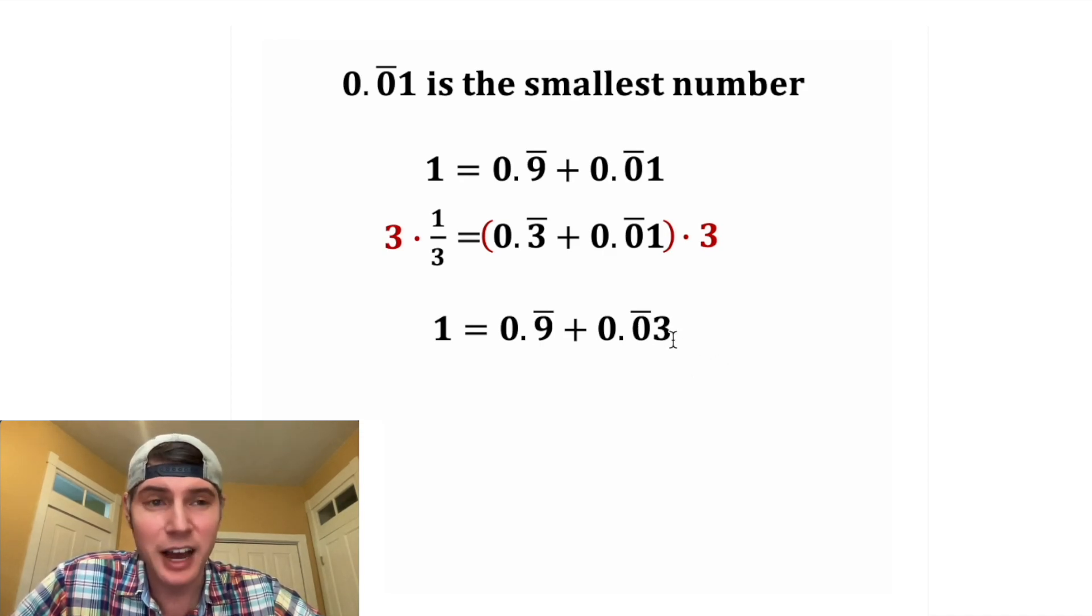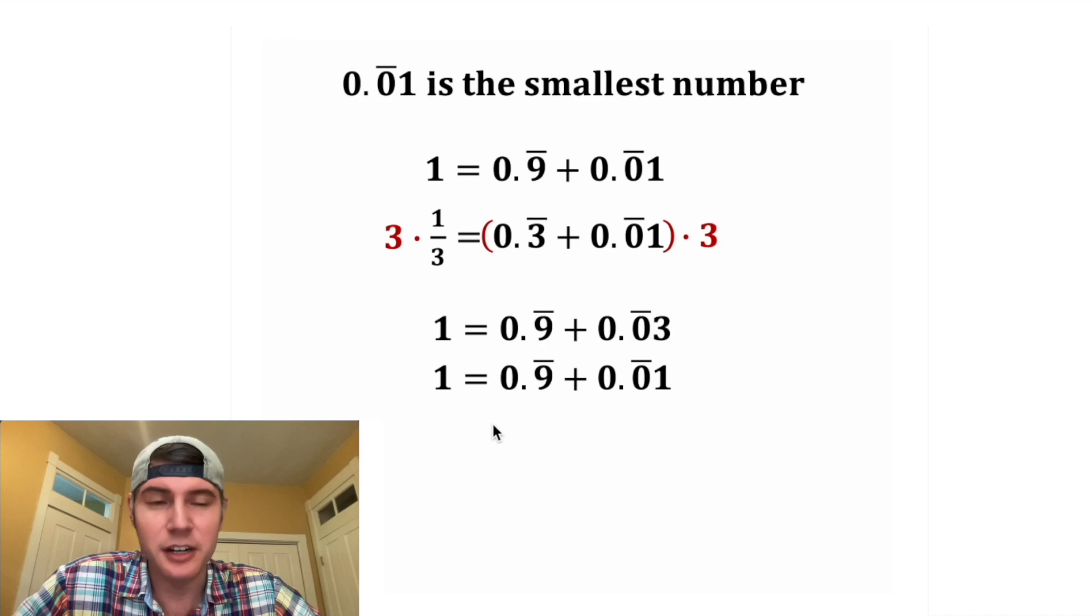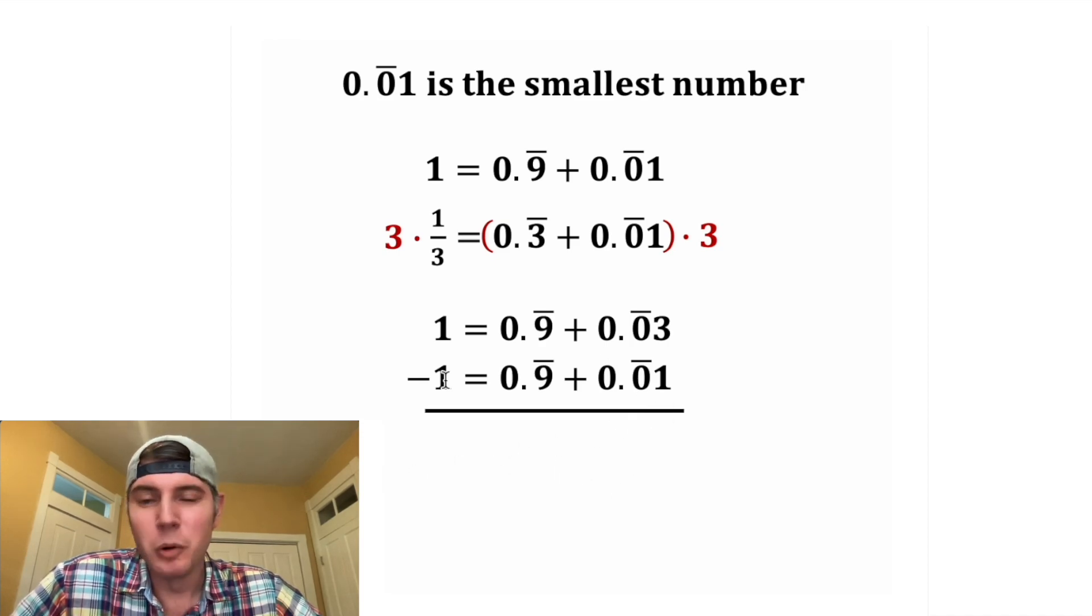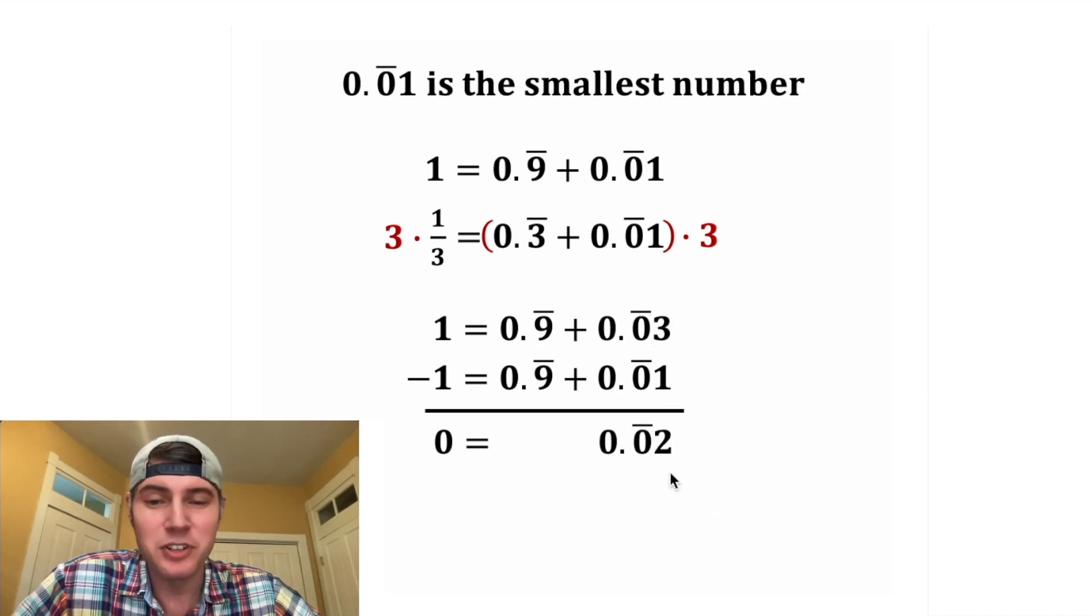But now we no longer have that contradiction, because 0.0 recurring three is not smaller than the smallest possible number. So it's cool that there's no contradiction. Let's copy this first row down here and let's subtract it from this. Well, one minus one is zero. This minus this cancels each other out, and then 0.0 recurring three minus 0.0 recurring one is 0.0 recurring two.